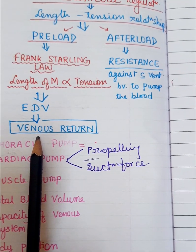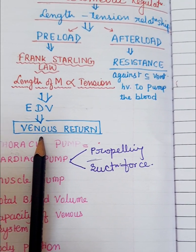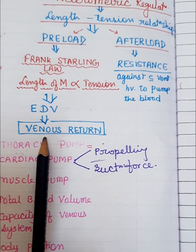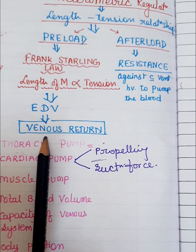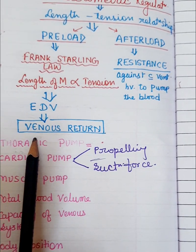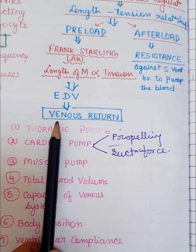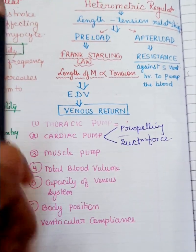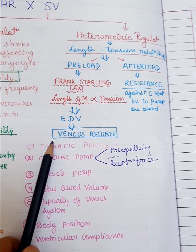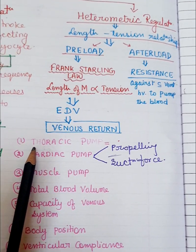The end-diastolic volume depends on venous return — how much venous blood the atrium receives. That same amount of blood goes to the ventricle at the end of diastole. So all factors that affect venous return can also affect stroke volume. The factors that affect venous return include: first, the thoracic pump.